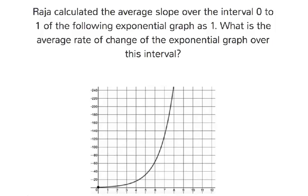It says here Raja calculated the average slope over the interval 0 to 1 of the following exponential graph as 1.